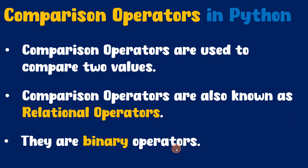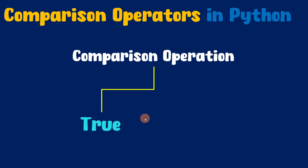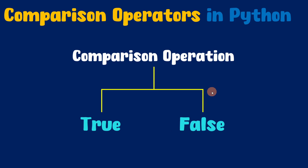Comparison operators are binary operators. As we discussed, comparison operators require two operands in order to perform comparison operations. Hence comparison operators are binary operators. Remember, when we use comparison operators to perform a comparison operation, the result will either be true or false. So the result will be a boolean value, which can either be true or false.